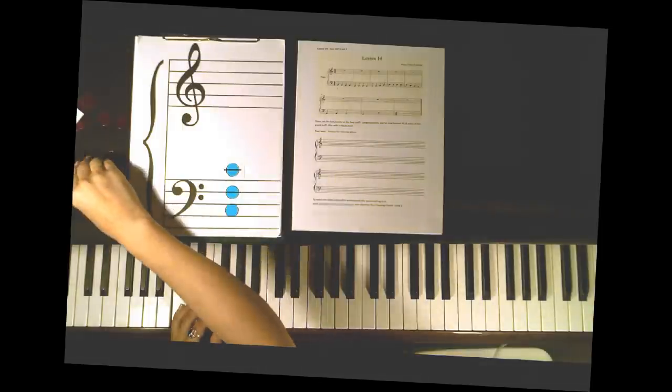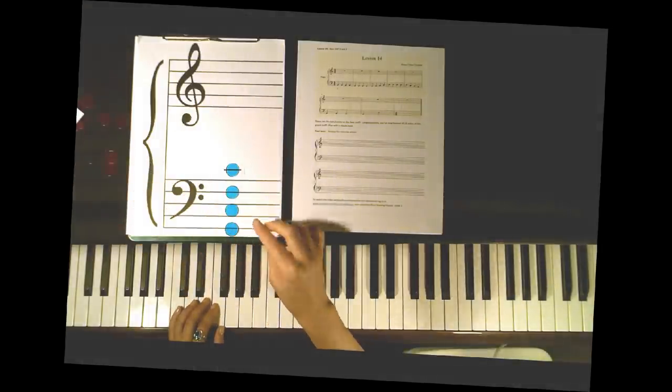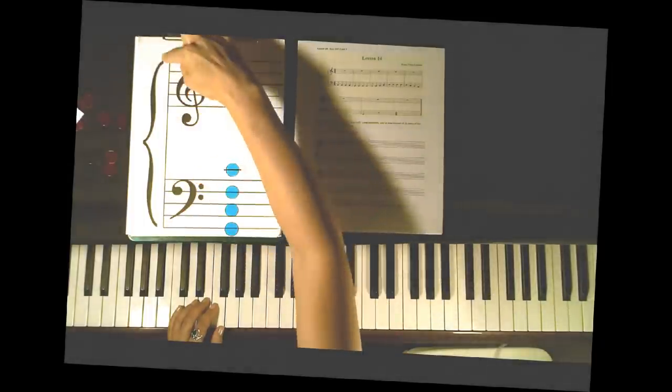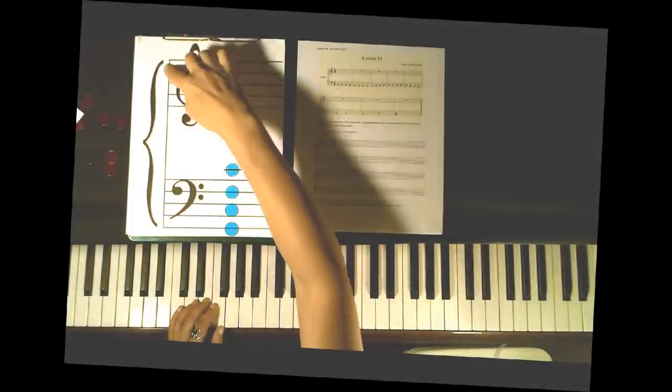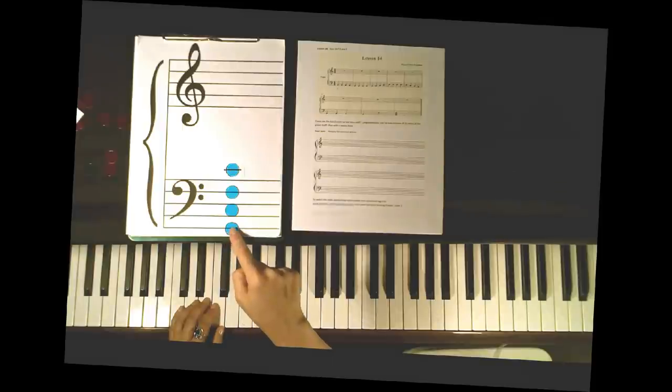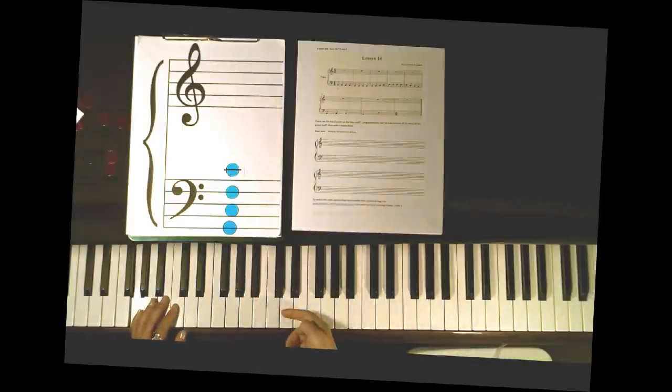And then I like to think of this next low note at the very bottom as the ground. So remember our flagpole F from the treble staff, and down here is the ground. So we have this note G, and it's found at the very bottom of the bass staff.